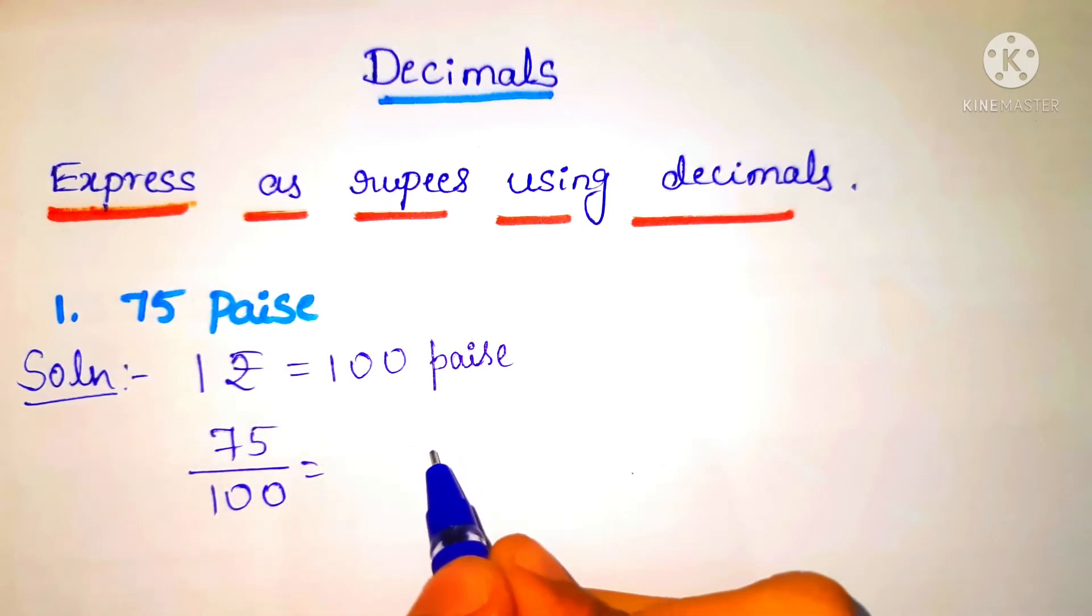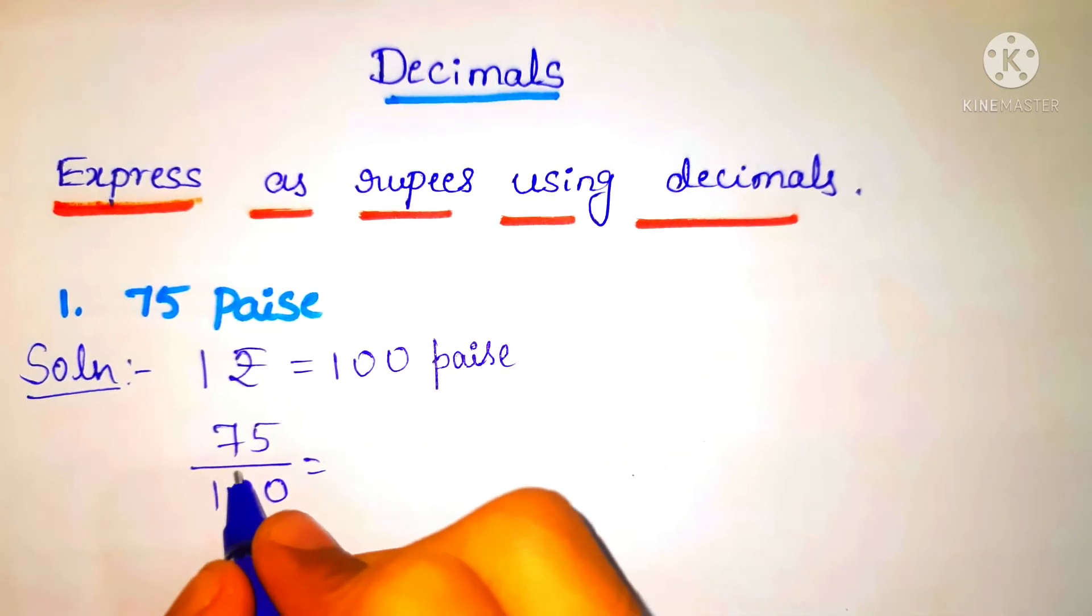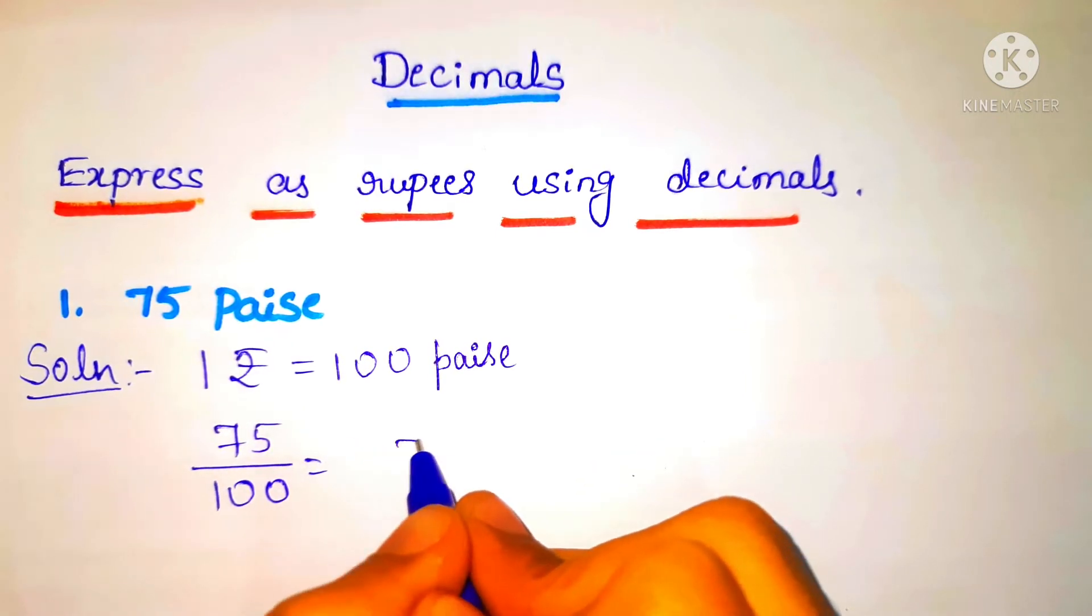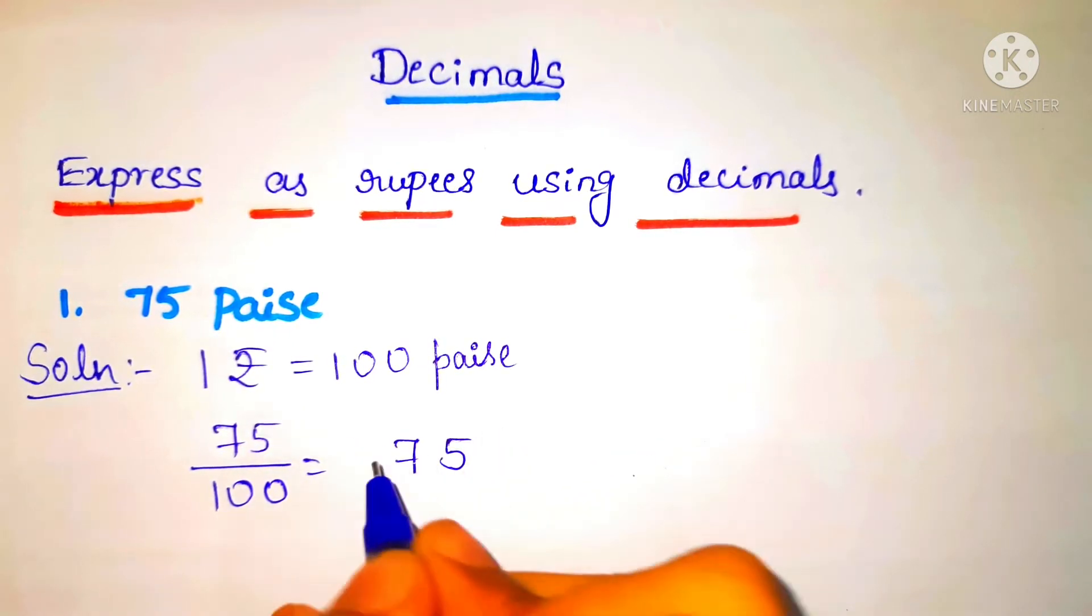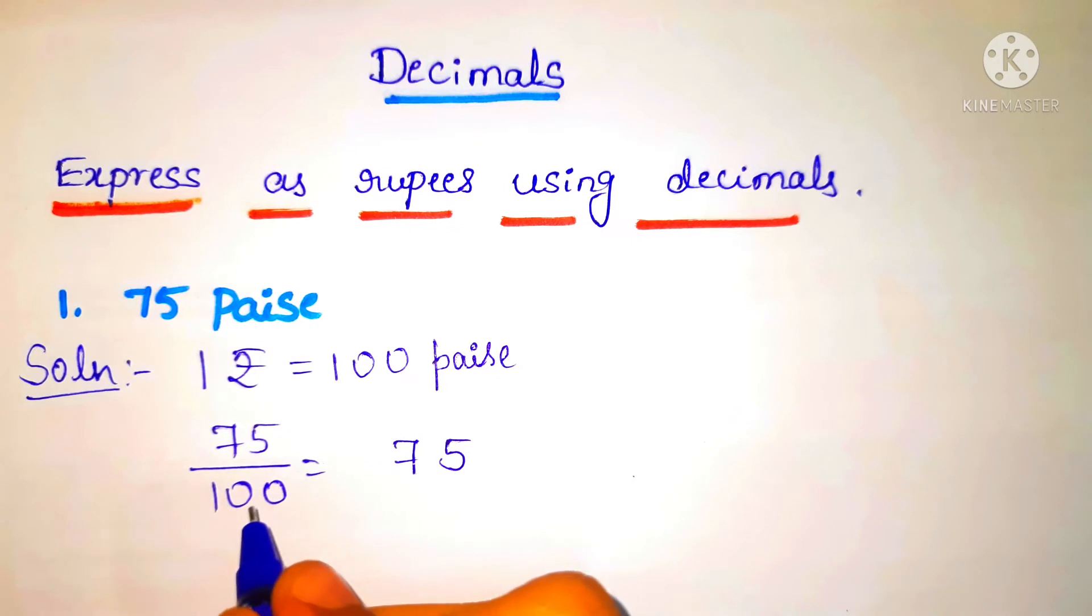We have to convert it into decimals. Let's first write the numerator as it is and count the number of zeros in the denominator. In the number 100 we have two zeros.